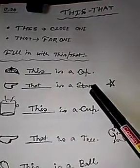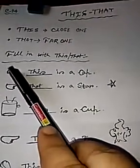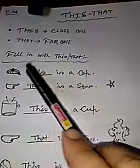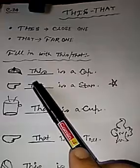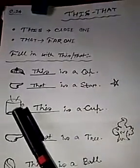Understand? That means the close one, the cap is close one, near one, so 'this is a cap'. Star is far away, so 'that is a star'. Repeat.